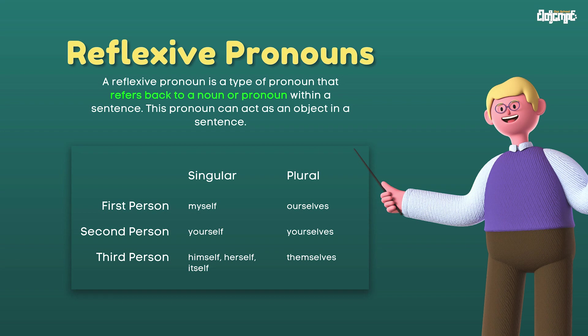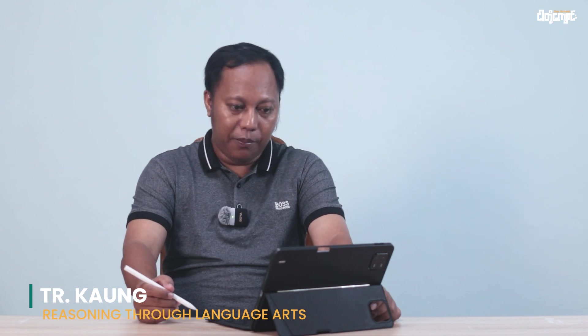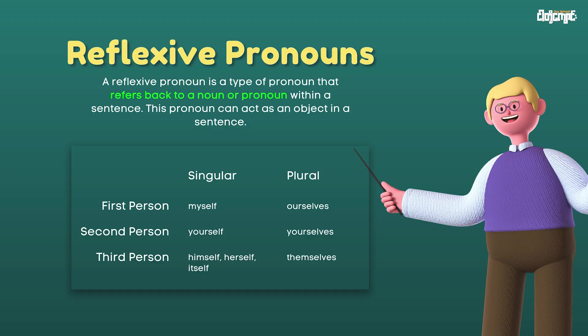Reflexive pronouns function in the same sentence, and can be read with an object. The sentence will look like an object in terms of pronoun. First person pronoun singular is myself, plural is ourselves. Second person pronoun singular is yourself, plural is yourselves. Third person pronoun singular is himself, herself, itself, and plural is themselves.